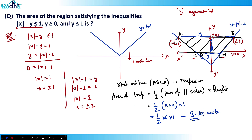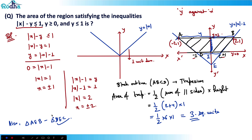You can also calculate this as area of triangle AEB minus area of triangle DEC — that's another way to get the same answer. There are multiple ways of doing that.